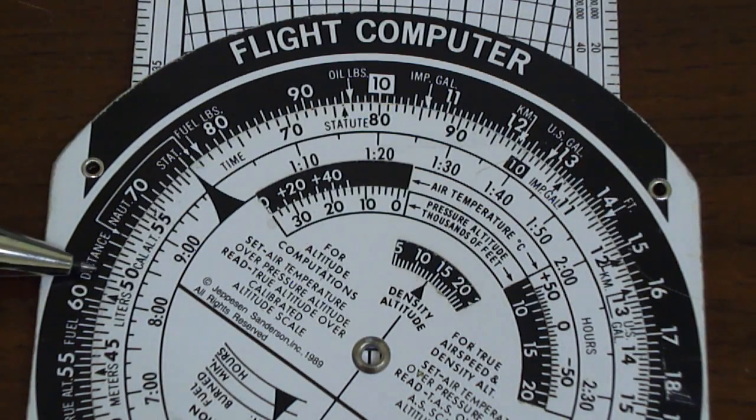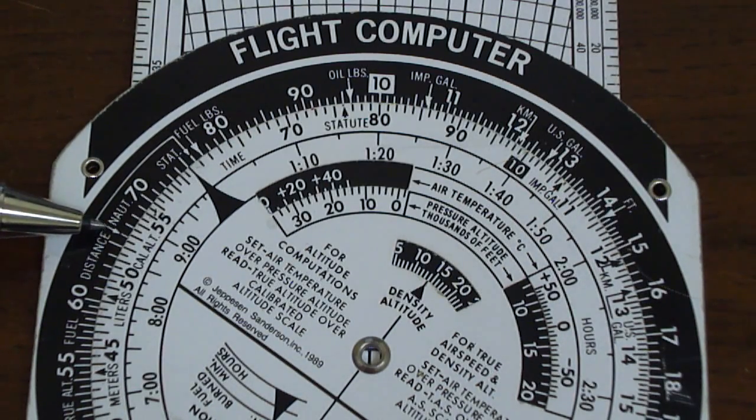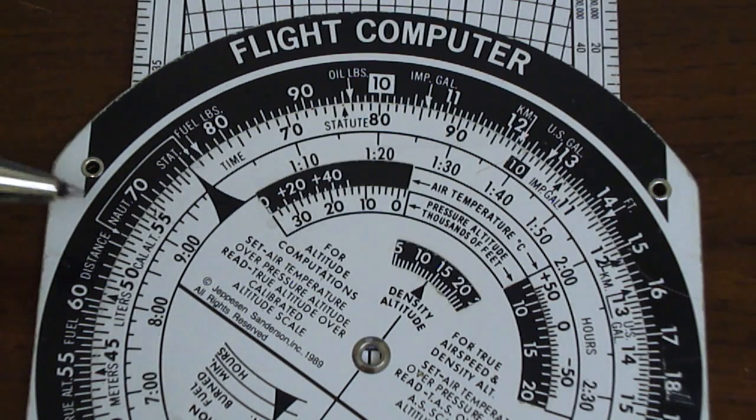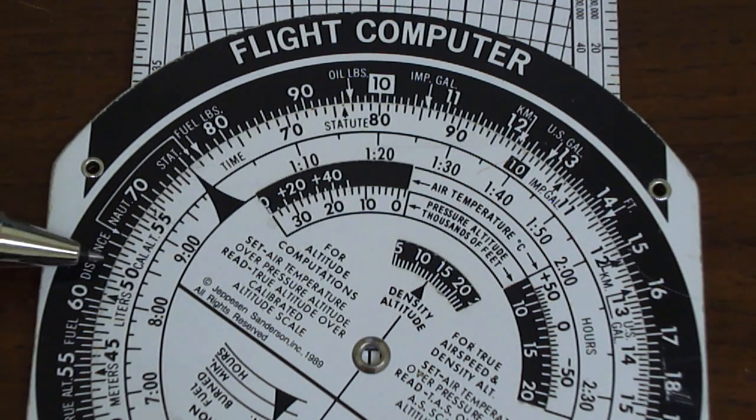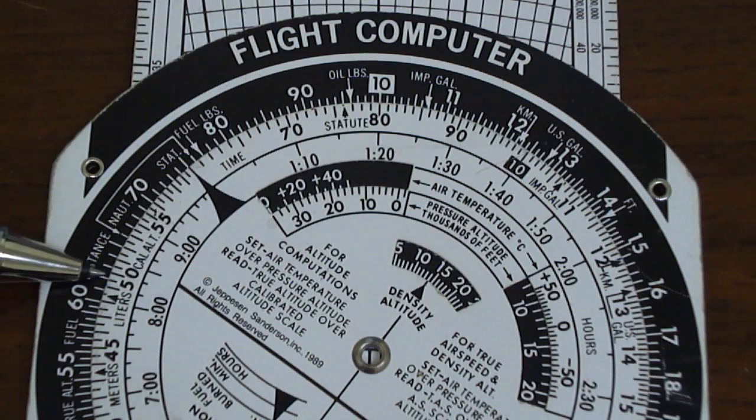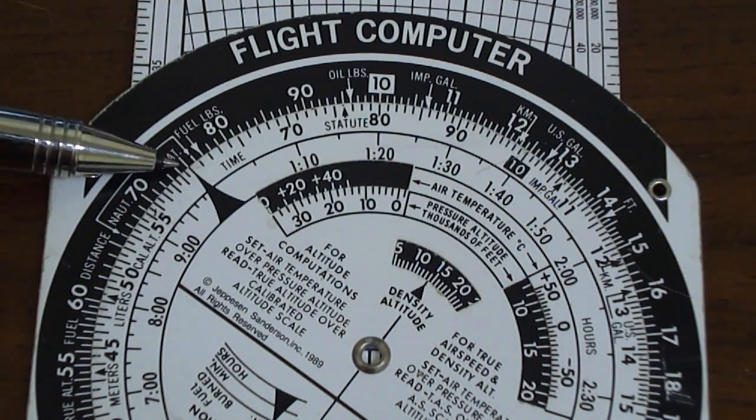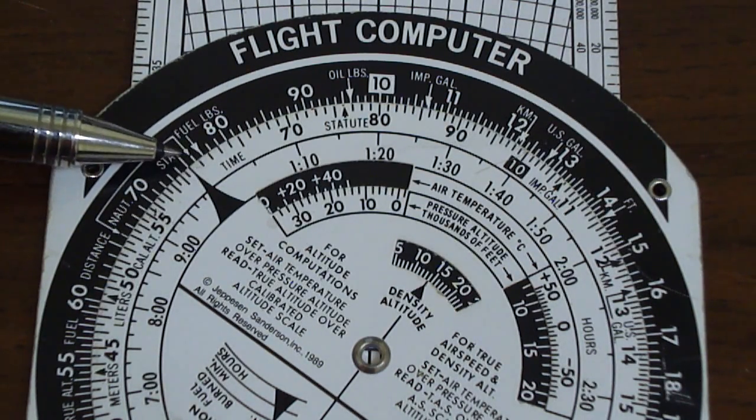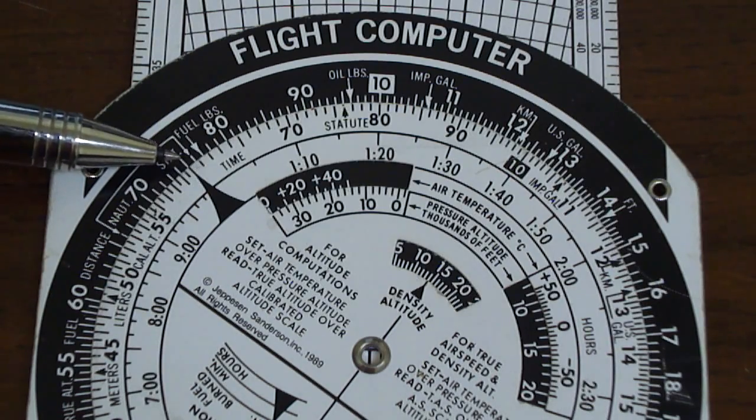Finally, all we have to do is move across to the stationary index to find the corresponding climb rate in feet per minute which we can read off the VSI. Here we can see 500 is opposite to 630, so at least 630 feet per minute climb must be maintained at 75 knots during an IFR departure. It is that simple.